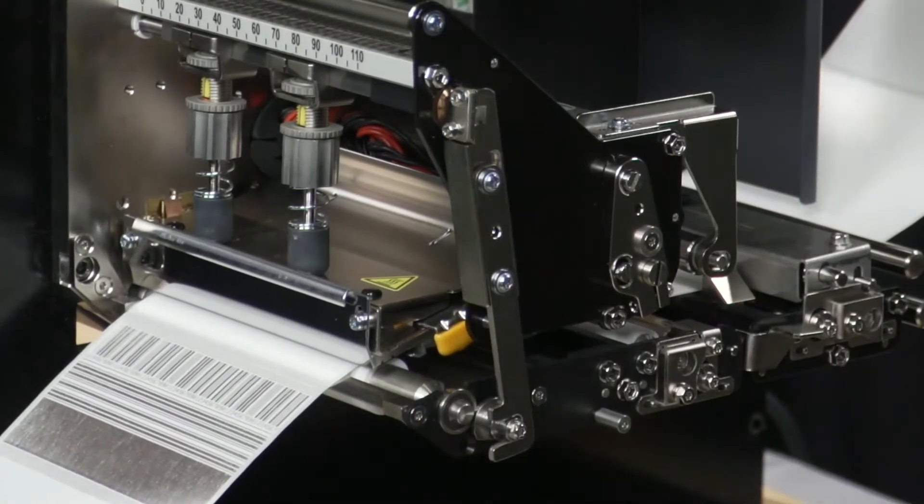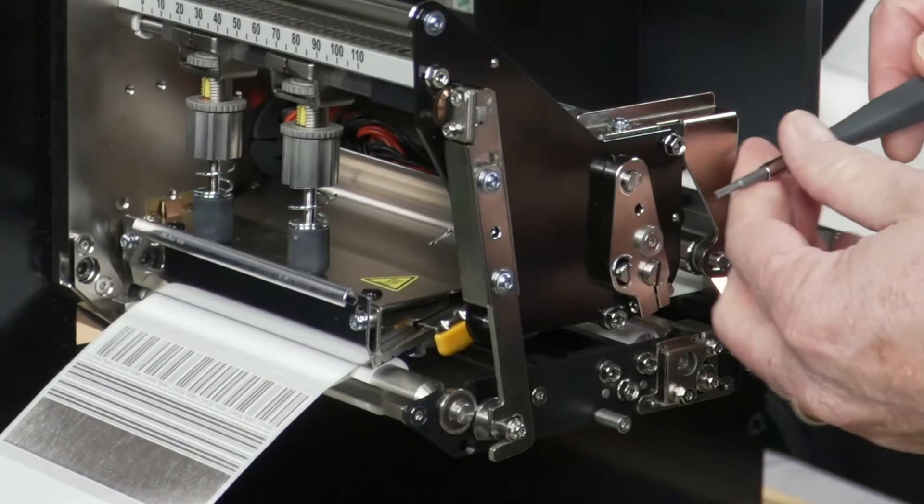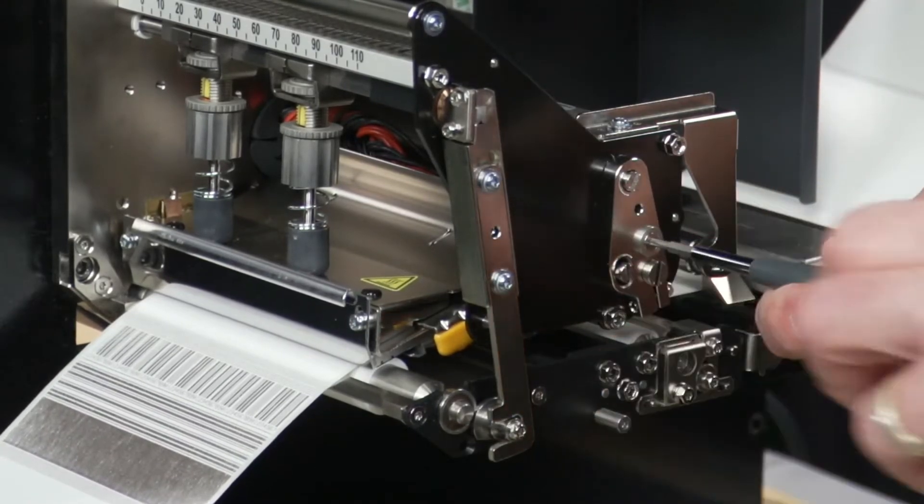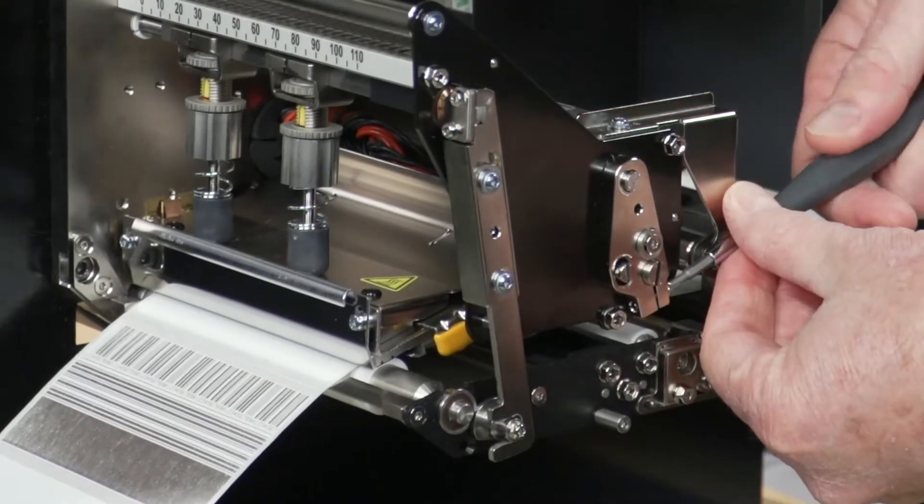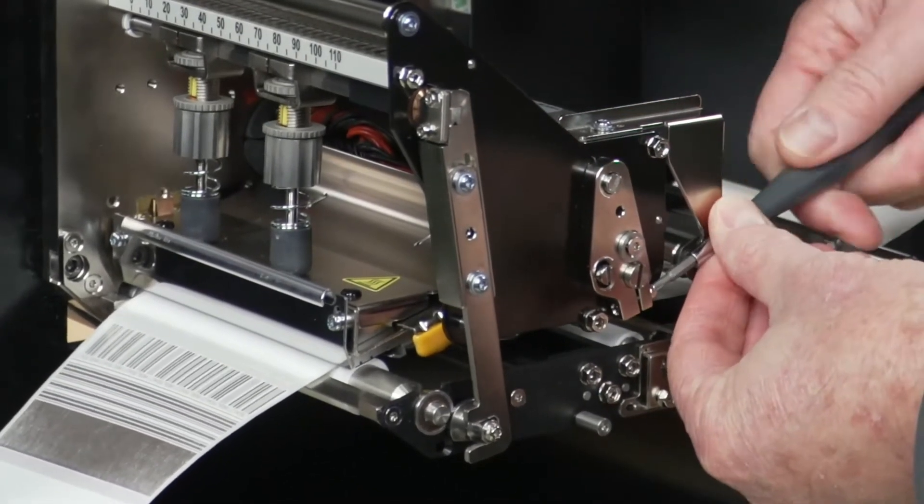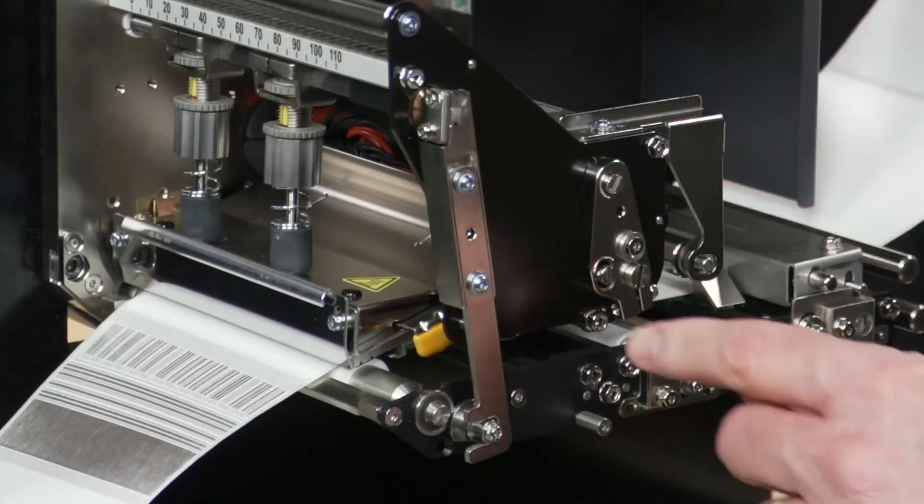So when I go into my printer here, I'm going to take my T9 Torque and I'm going to undo two locking screws. This locking screw and this locking screw. And now I have the ability to adjust these.